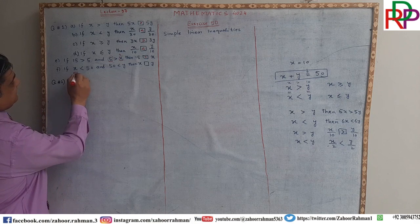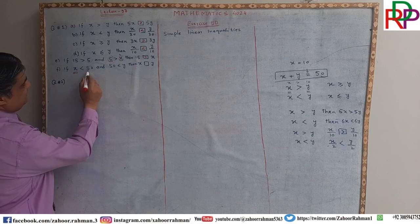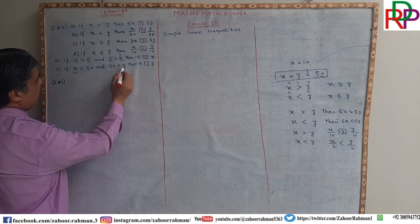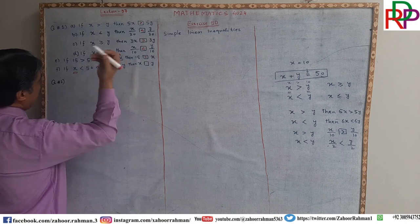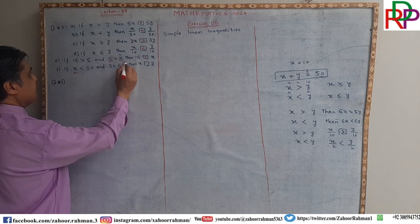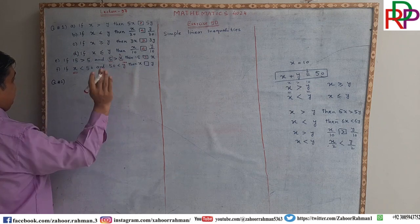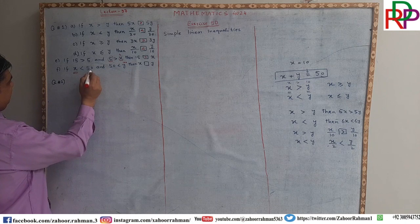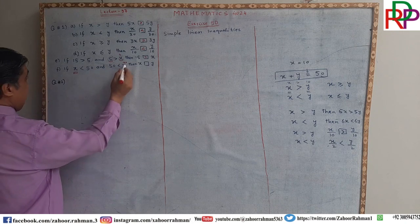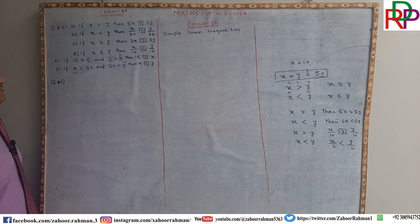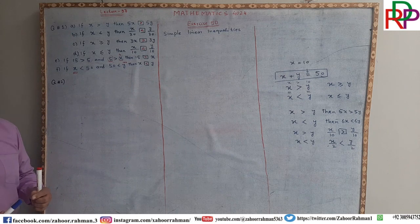If x is less than 50 and 50 is less than y — where y may be any value, for example 100 — then 50 is less than 100, which is true. And since x is less than 50, x will also be less than 100. So you have to keep these rules in mind.